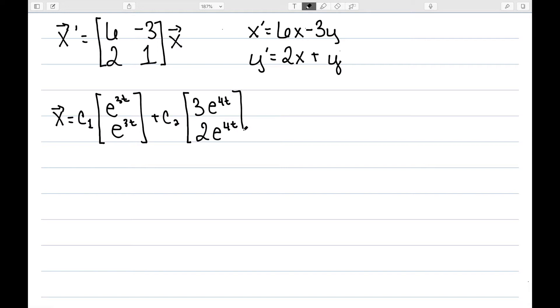So when I write these out individually, I'm claiming x is equal to c1·e^(3t) + 3c2·e^(4t). And y is c1·e^(3t) + 2c2·e^(4t).